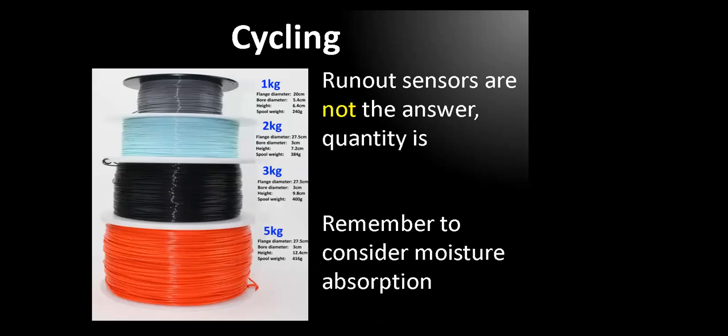And one of the things that we probably would have started sooner, had we really thought about it, was getting large orders of filament. Maybe go into these three kilogram, five kilogram, what we call the Texas sized growth. In fact, actually, the company is in Texas that makes some of these. Getting large quantity allows us to run continuously.